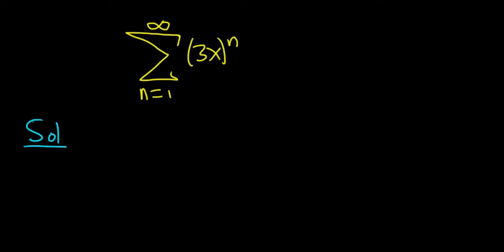So to do the first part, to find out the values of x for which the series converges, notice that this is geometric and your r is equal to 3x. So we know that this will converge if the absolute value of 3x is less than 1. Otherwise, it's going to diverge. If you have the absolute value of r greater than or equal to 1, it's going to diverge.